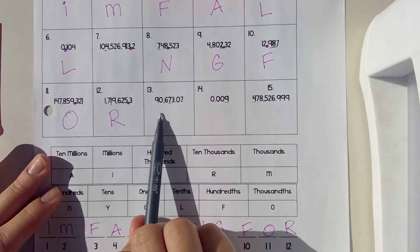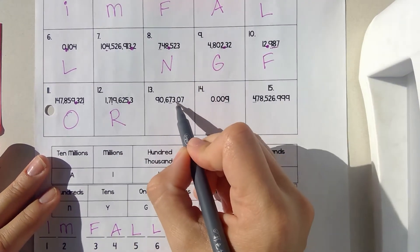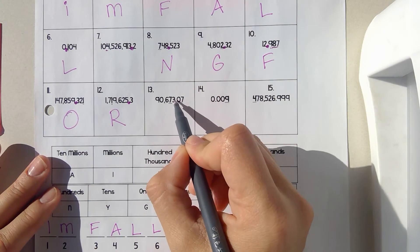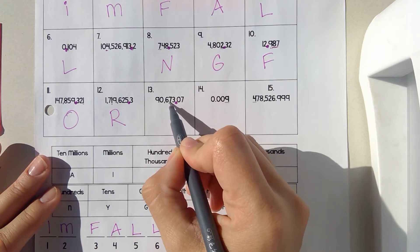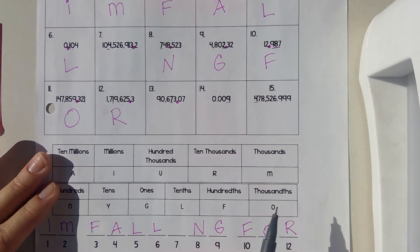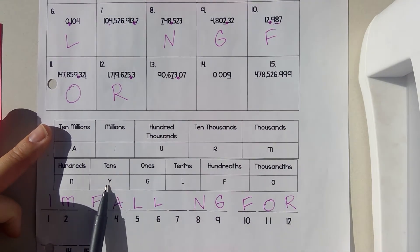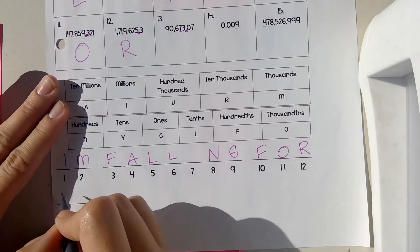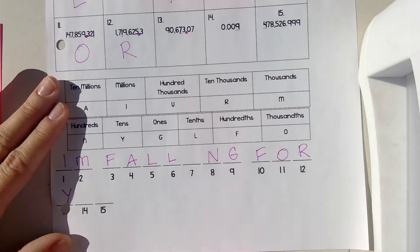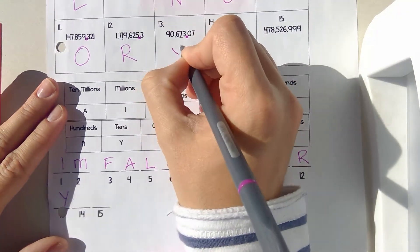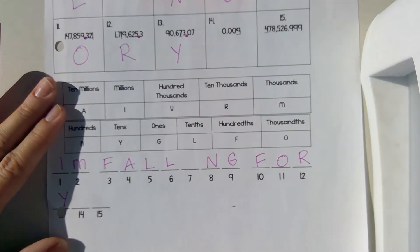Number thirteen — this is a decimal. So that would be ones, then tens. Tens are Y. So thirteen is Y.